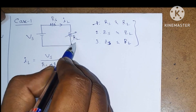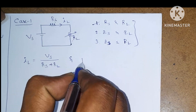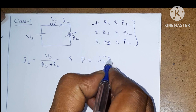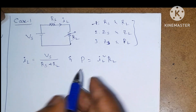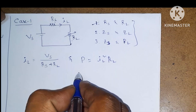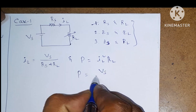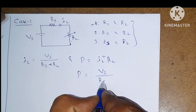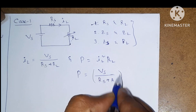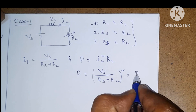The power dissipated across the load resistor is P = I_L² × Rl. Substituting the expression for I_L, we get P = (Vs / (Rs + Rl))² × Rl.